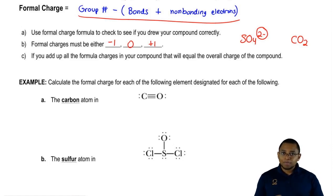We can look to see if we get one of three answers: negative 1, 0, or plus 1. We can also check to see do all my formal charges add up to give me the charge of the compound. If they don't, you did something wrong.